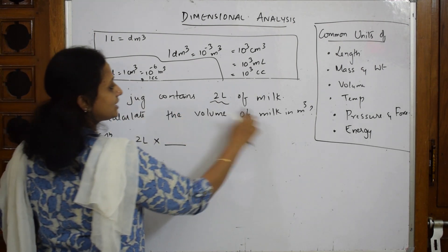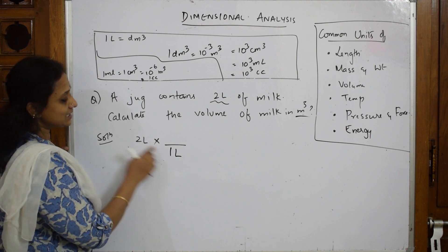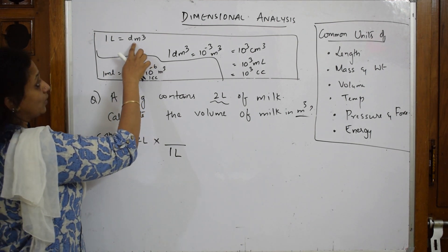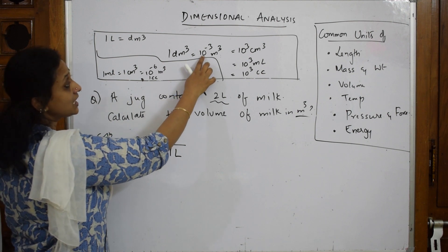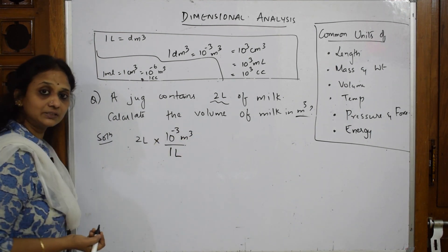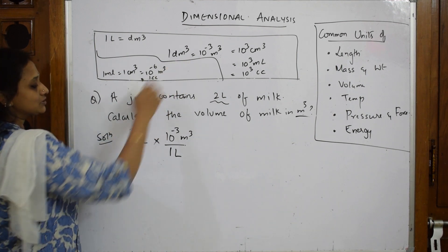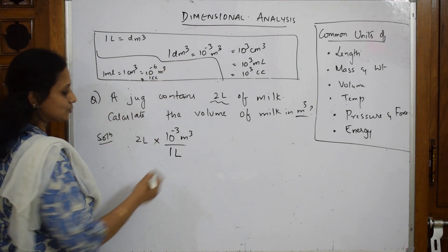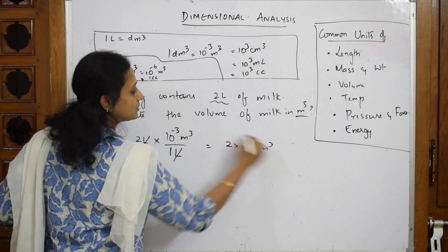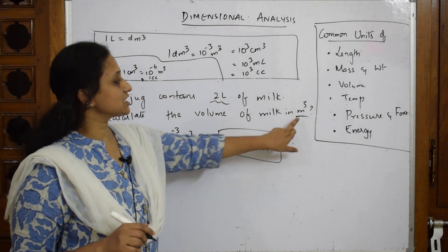They've asked me to convert 2 liters into meter cube. Take 2 liters, divide by 1 liter so the liters cancel. From the table, 1 liter = 1 dm³ = 10⁻³ m³. Multiply with 10⁻³ m³. The liters cancel and we get 2 × 10⁻³ m³. That is the answer - using dimensional analysis, cancel the common terms.